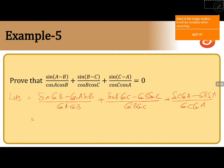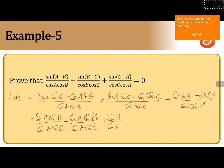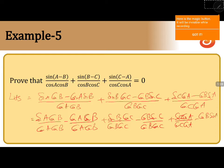Now divide each term by the denominator: sin A cos B divided by cos A cos B, minus cos A sin B divided by cos A cos B, minus cos B sin C divided by cos B cos C, plus sin C cos A divided by cos C cos A, minus cos B sin A divided by cos C cos A.